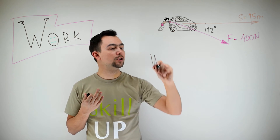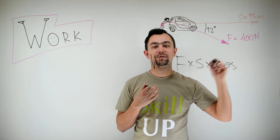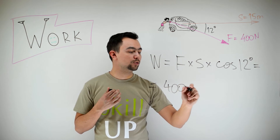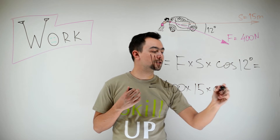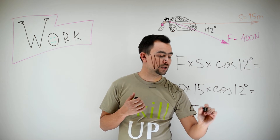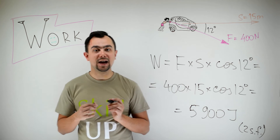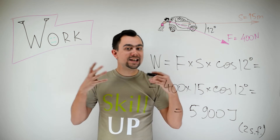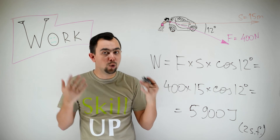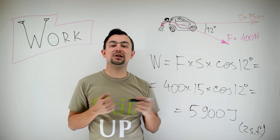We're applying the previous formula. Work is equal to force multiplied by displacement and multiplied by the cosine of the angle — cosine 12 degrees. So, plugging in 400 multiplied by 15 and multiplied by cosine 12, we get 5,900 J to two significant figures. 5,900 J of the chemical energy in her muscles was converted into heat, because the work is done against the force of friction, so this energy has been converted into heat.